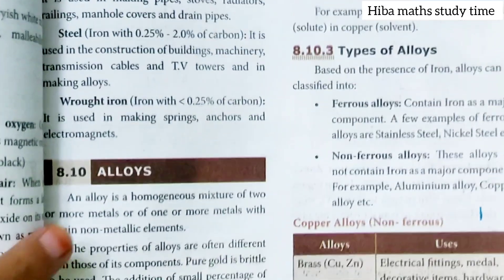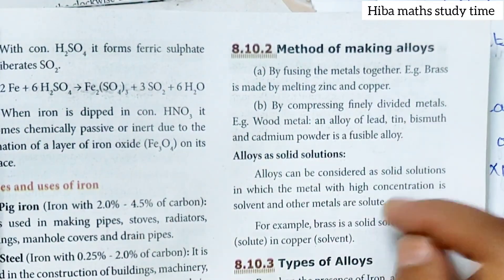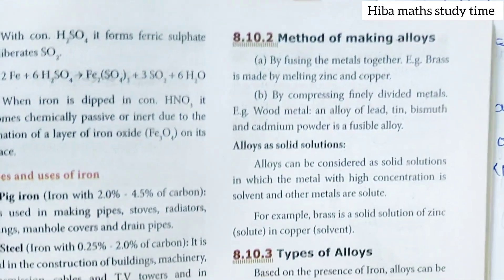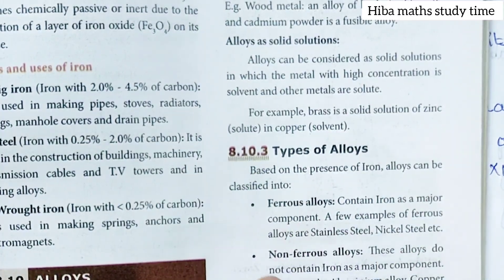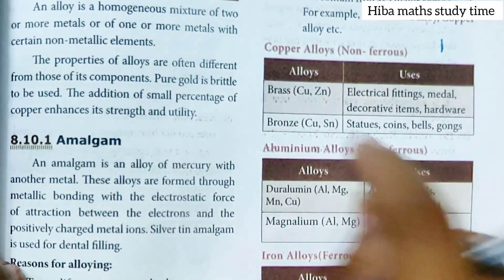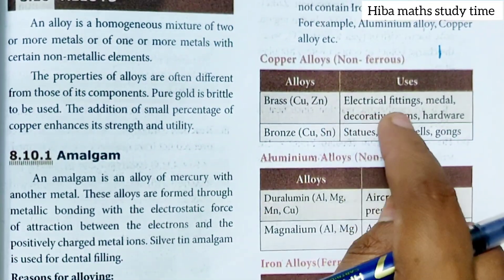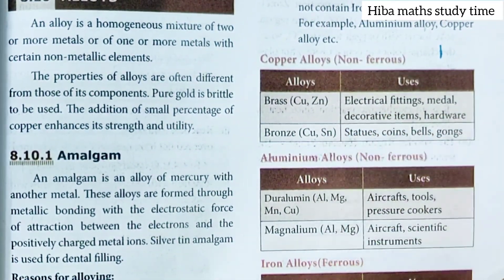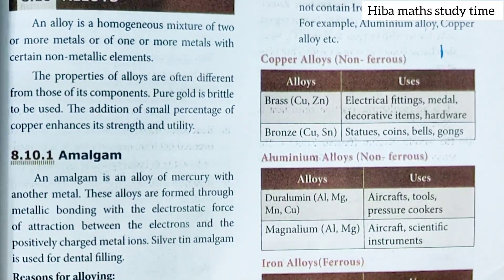Here we have questions ready: what are the methods of making alloy? Book inside, study types of alloys — ferrous alloys, non-ferrous alloys. Copper and its uses, define the uses of brass, electrical fittings, metal, decorative items, aluminium alloy and other uses. Each page is very important.